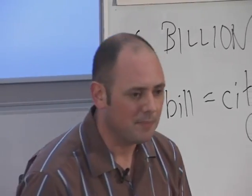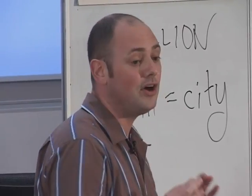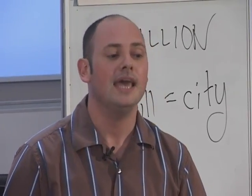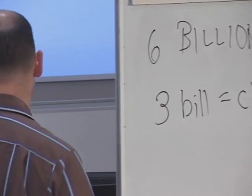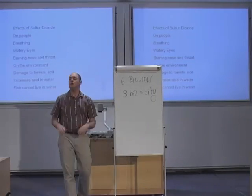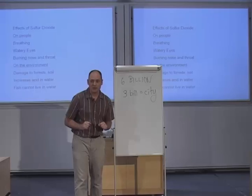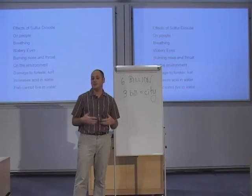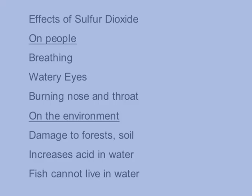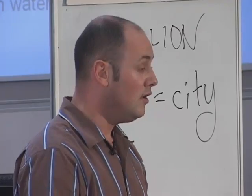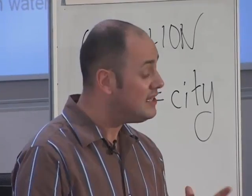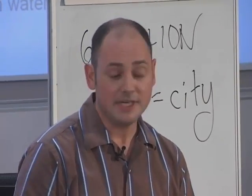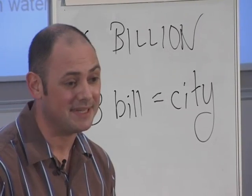Let me spell out the problems sulfur dioxide can cause for both people and the environment. People exposed to SO2 — many of them living in cities — have difficulty with things like this: difficulty with breathing, watering eyes, and burning nose and throat. For some, these effects are temporary. But in other cases, SO2 can actually cause permanent damage.